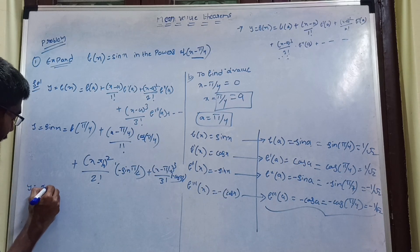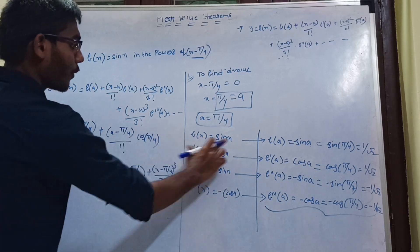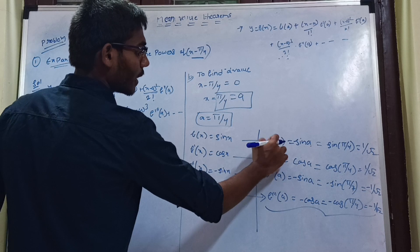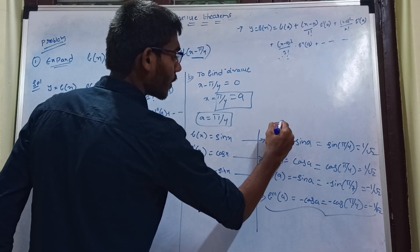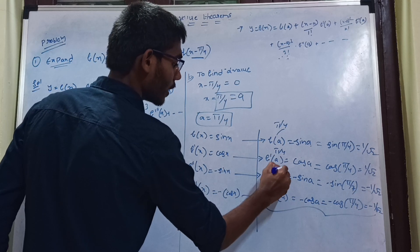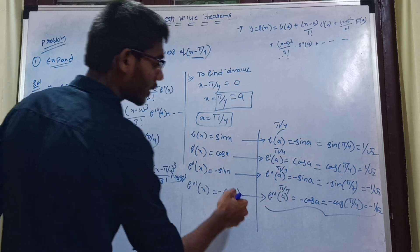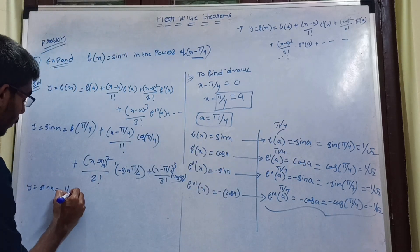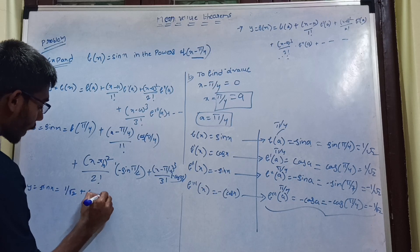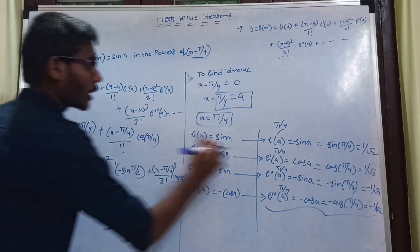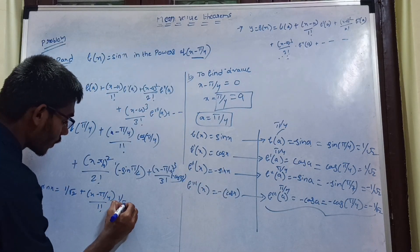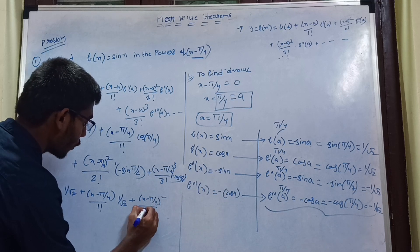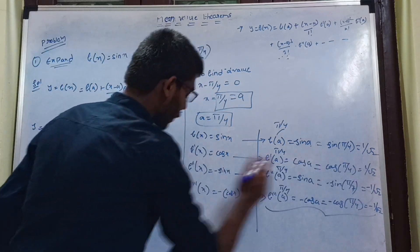So y = sin(x) = f(π/4), and f(sin a) gives 1/√2, plus (x minus π/4) by 1 factorial times 1/√2, plus (x minus π/4) whole square by 2 factorial times minus 1/√2, plus (x minus π/4) whole cube by 3 factorial times minus 1/√2.